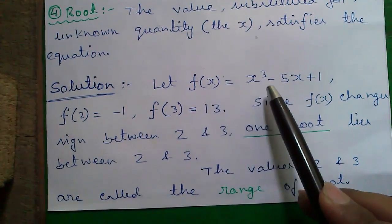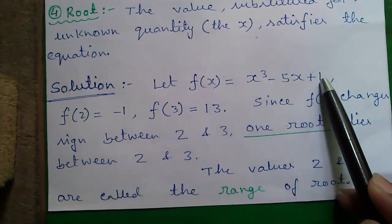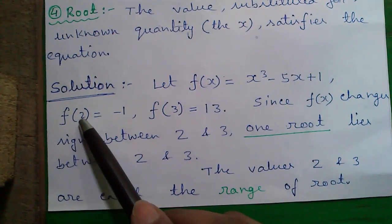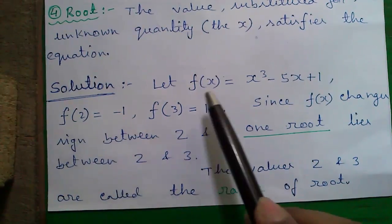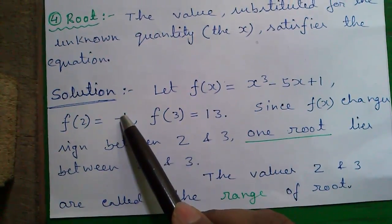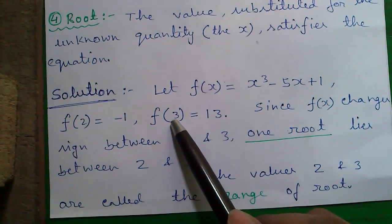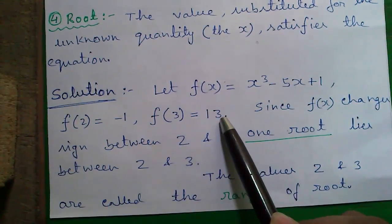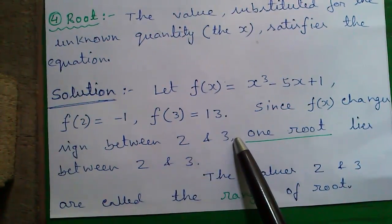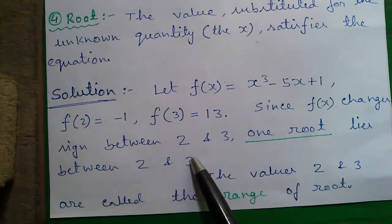Let f(x) = x³ - 5x + 1 given in the question. If we put x = 2 in it you will get -1 and if we put x = 3 we will get +13. So since f(x) changes sign between 2 and 3 one root lies between 2 and 3.